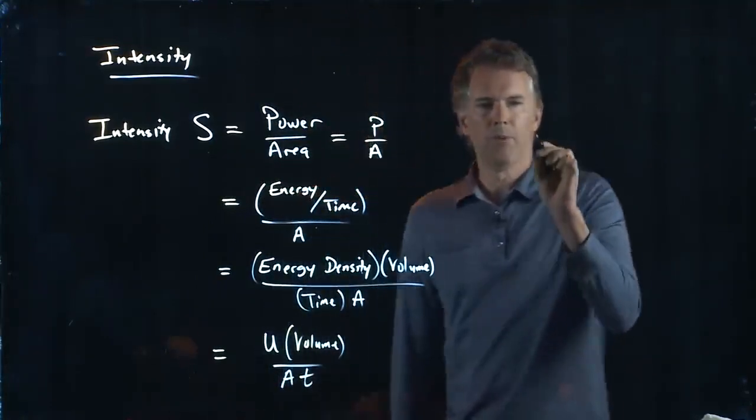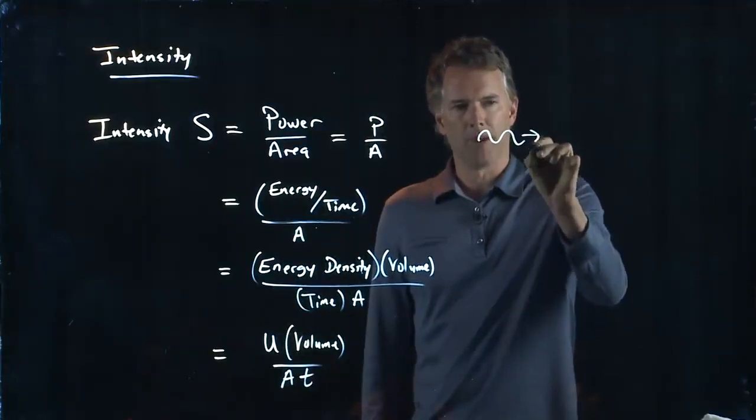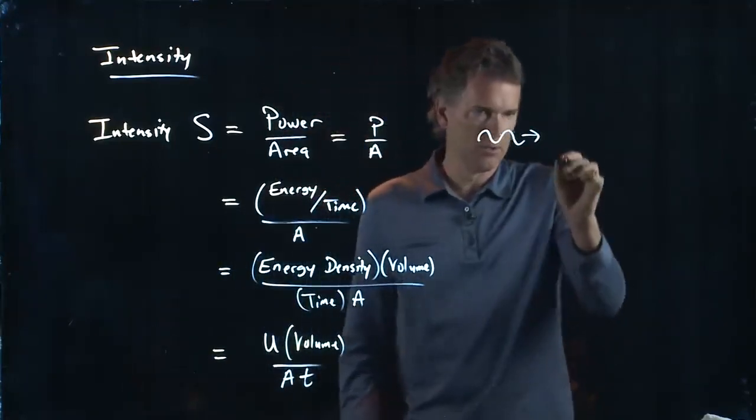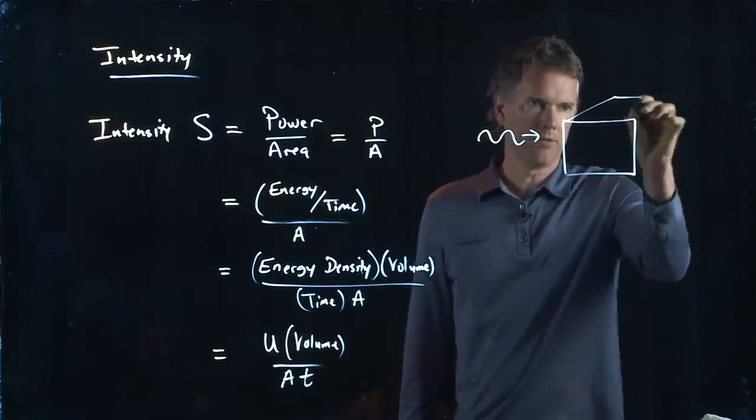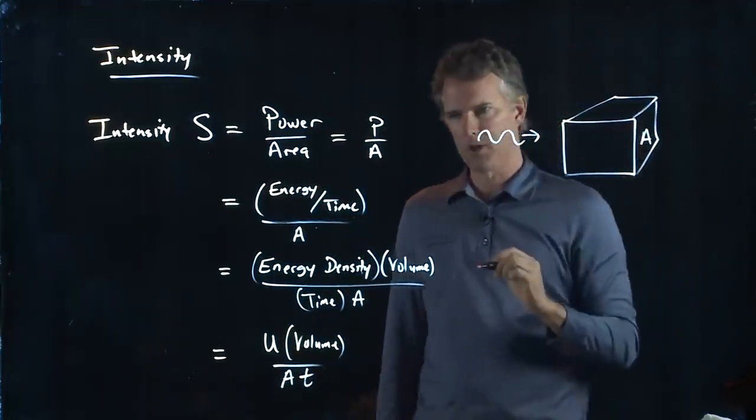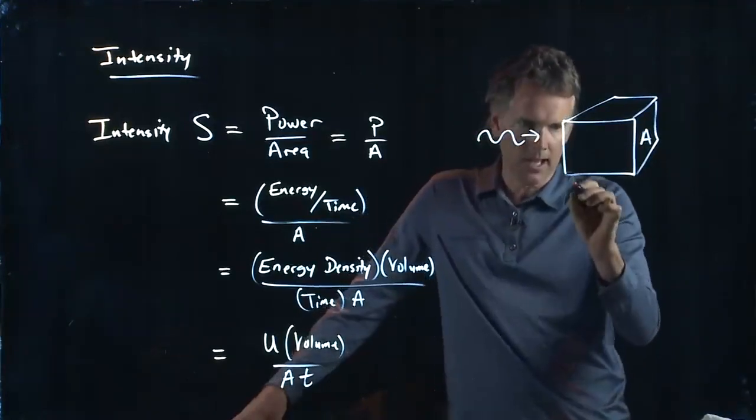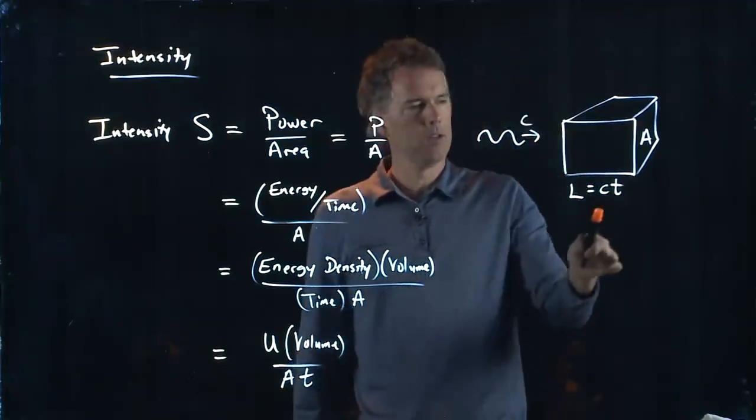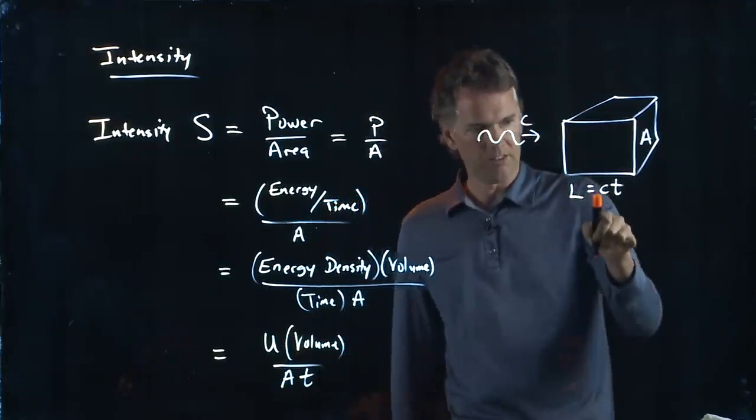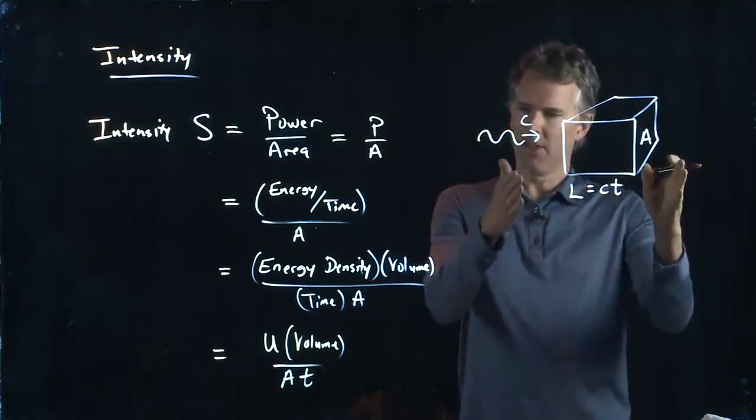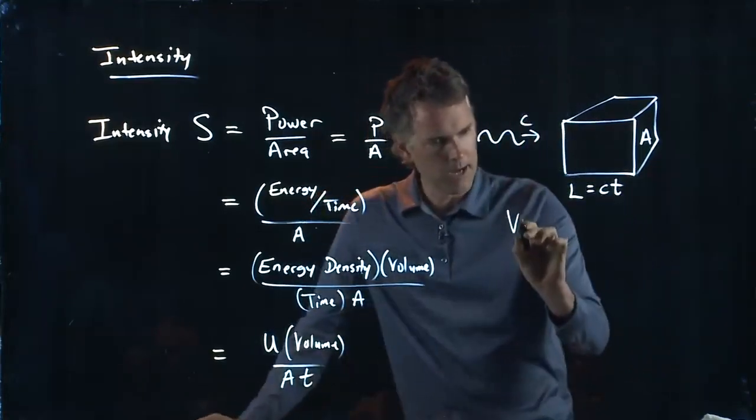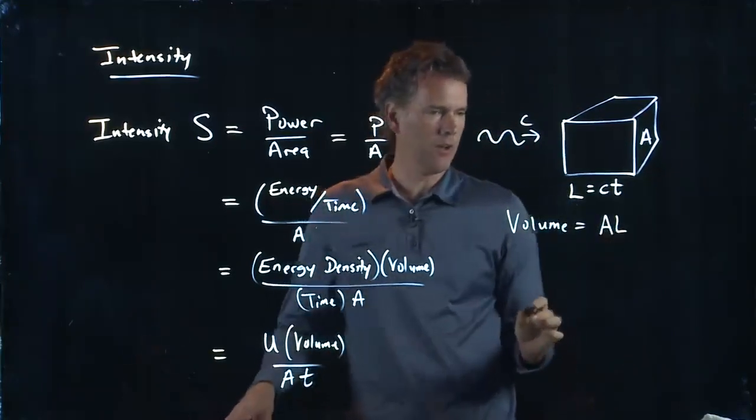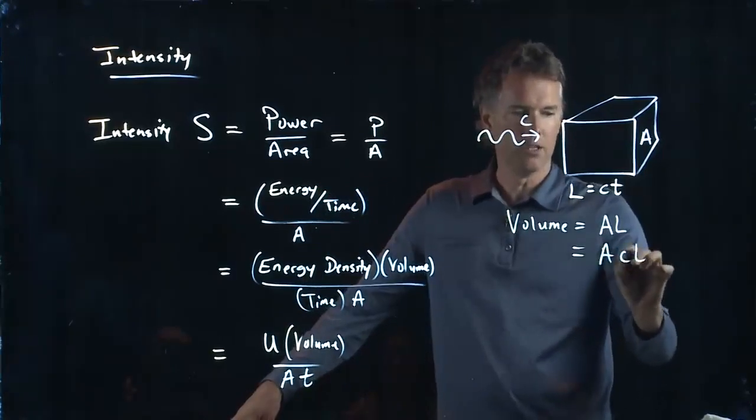So what do we mean by volume? Well, let's think about an electromagnetic wave propagating along. This electromagnetic wave propagating along is going to occupy a region of space that has a cross-sectional area A to it, and it has a length here, L, which is equal to how fast it's moving for how long. So it moves at C, it does that for a time T, that's the length of this box. So what's the volume of the box? Well, it's just cross-sectional area A times the length L. So it is A, C, T.